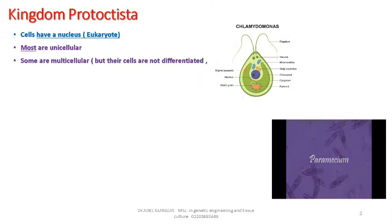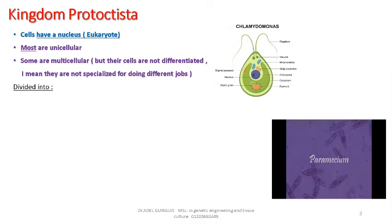The Protista kingdom is divided into two groups: number one, plant-like protists, and number two, animal-like protists.